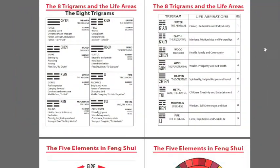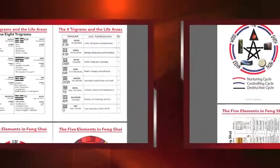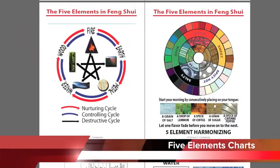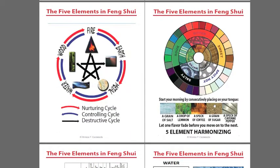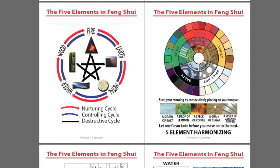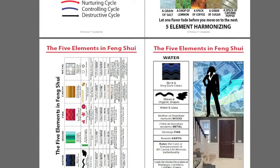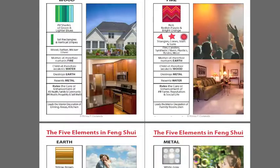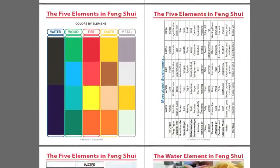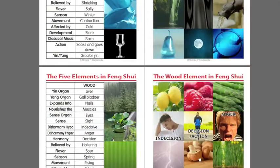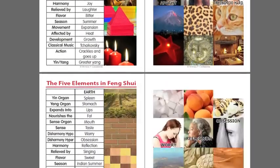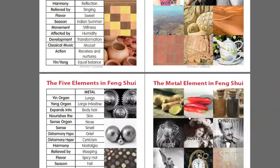There are also charts about the eight trigrams and how they relate to the life areas. The five elements — there is a lot of information in this book about the Feng Shui five elements. If you are studying Feng Shui or any other discipline where you need to learn about the five elements, these are really important and easy to understand charts. This is the information for the water element, the wood element, the fire element, and the metal element.